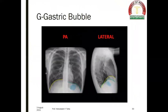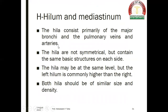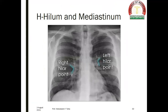The gastric bubble is seen underneath the left hemidiaphragm in the PA and lateral view. Hilum and mediastinum: the hilum consists primarily of the major bronchi and the pulmonary veins and arteries. The hila are not symmetrical but contain the same basic structures on each side. The hila may be at the same level, but the left hilum is commonly higher than the right. Both hila should be of similar size and density. The left hilum is higher than the right.